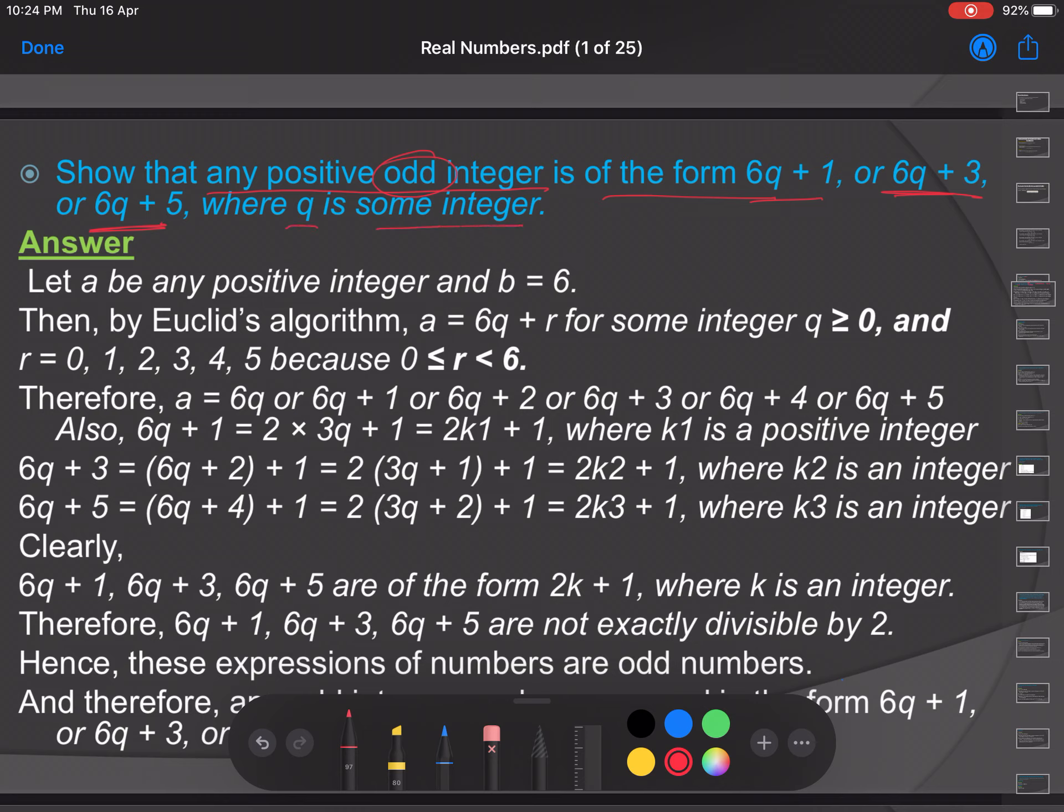For this proof, first we take a to be any positive integer and b equals 6. Why? Because we have to show 6q plus 1, 6q plus 3, or 6q plus 5, therefore we take b equals 6. By Euclid's division algorithm we can say that a equals 6q plus r for some integer q greater than or equal to 0.